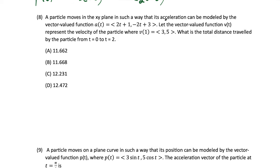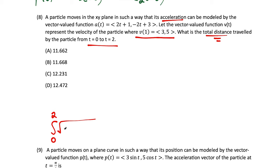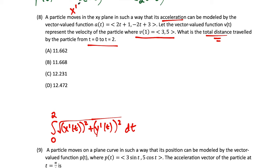Question 8: a particle has acceleration modeled by the vector-valued function a of t, with velocity v of t and initial condition v of 1 equals (3, 5). We want the total distance traveled from t equals 0 to t equals 2. The total distance is the integral from 0 to 2 of the speed function. We start with the acceleration: x double prime of t equals 2t plus 1, and y double prime of t equals negative 2t plus 3.